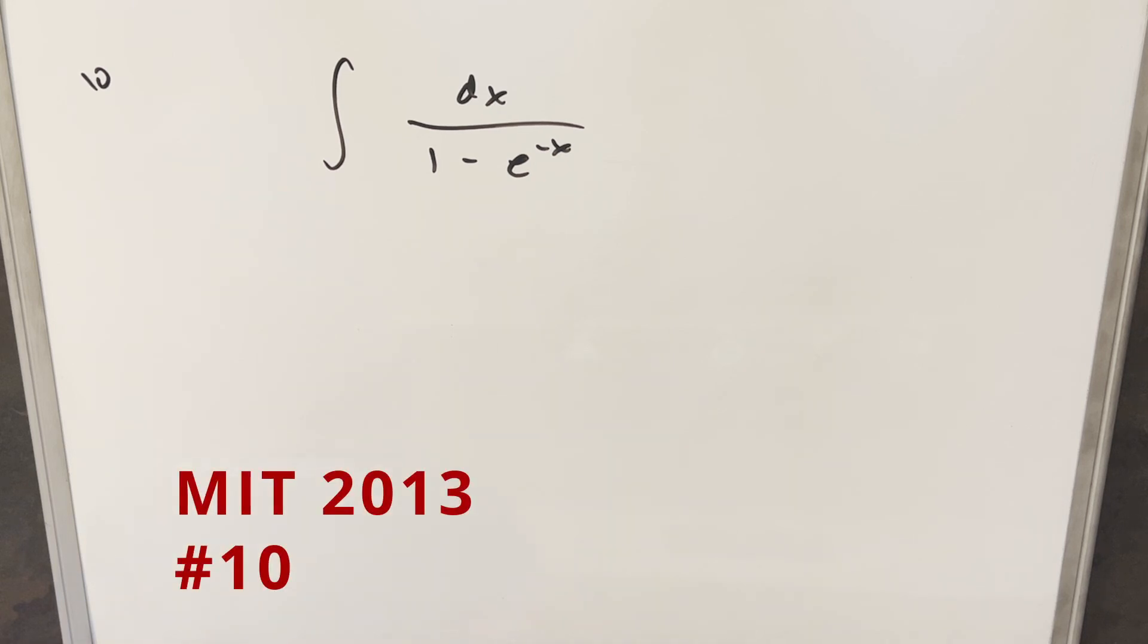Okay, we have here on the board a really quick integral from the MIT integration bee 2013. This one's problem 10. We have the integral of 1 over 1 minus e to the minus x dx.